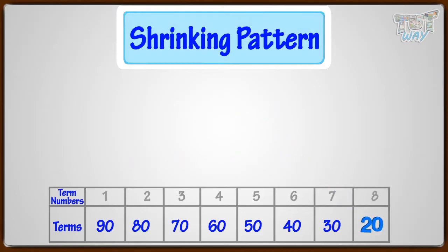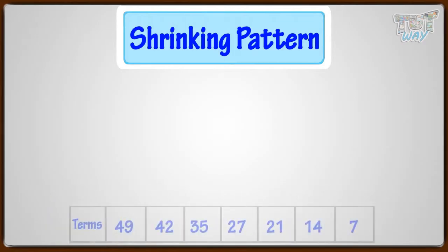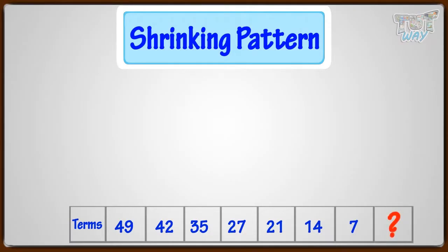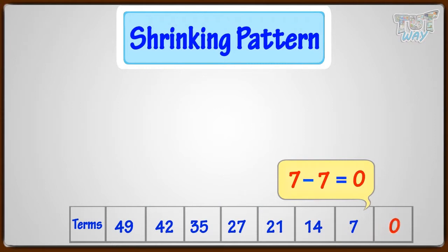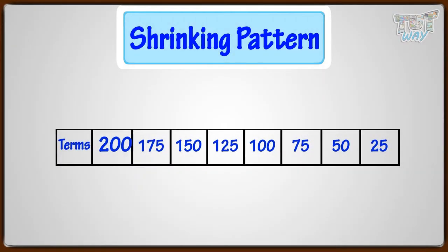Let's have a look at more shrinking patterns. Here we have a shrinking pattern — what should be the next term? We are subtracting 7 with every successive term. So the next term would be 7 minus 7, that is, the next term would be 0. Here we have another shrinking pattern where each term decreases with a growing term number. So these are shrinking patterns.